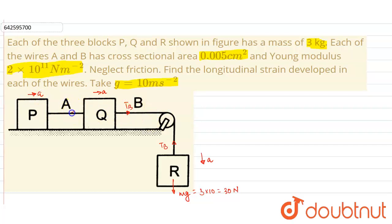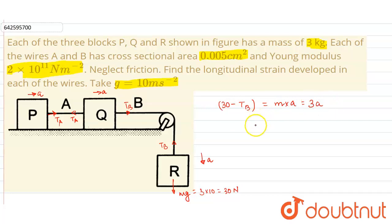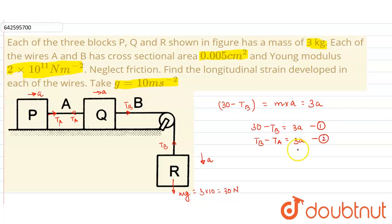The tension in string A is T_A. Writing the equation of motion for block R: the net force is 30 − T_B = 3A (equation 1). For block Q: T_B − T_A = 3A (equation 2). For block P: T_A = 3A (equation 3).